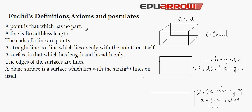Euclid has given some definitions. The first is: a point is that which has no part. Suppose this is a point — it has no part and no structure.